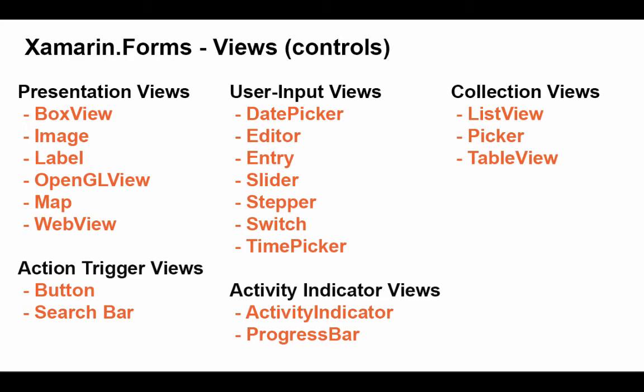There are activity indicator views we can utilize. The activity indicator gives us that familiar little circle showing something is in progress, or we can do a linear progress bar. Finally, we have some views for working with collections: a list view and a table view. The picker is used to select items out of a list view. List views appear all the time — for example, a list of videos in a media app or an inbox showing mail, with each item represented as an object in the list view.